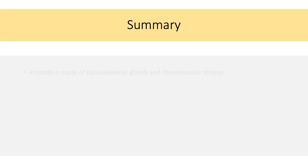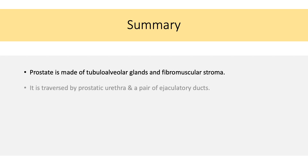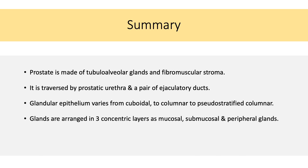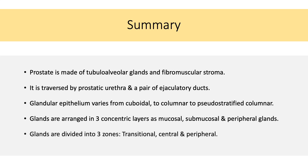To quickly recall what we have seen: prostate is made of tubular alveolar glands and fibromuscular stroma, and is traversed by the prostatic urethra and a pair of ejaculatory ducts. Glandular epithelium varies from cuboidal to columnar to pseudostratified columnar type. Glands are arranged in three concentric layers — mucosal, submucosal, and peripheral — and are also divided into three zones based on development and pathological behavior: transitional zone, central zone, and peripheral zone.